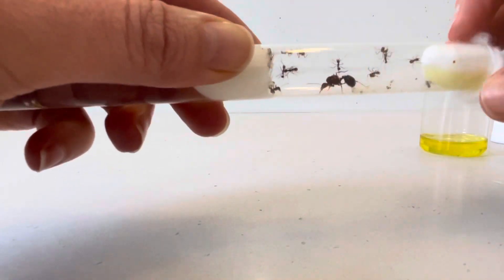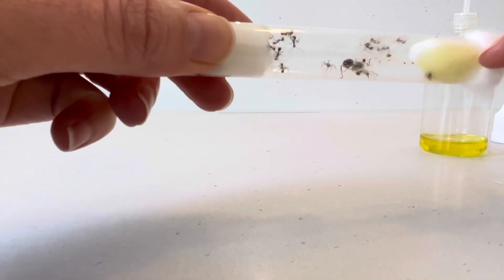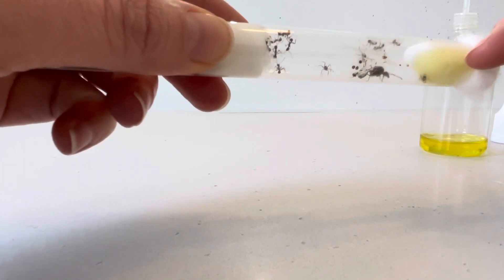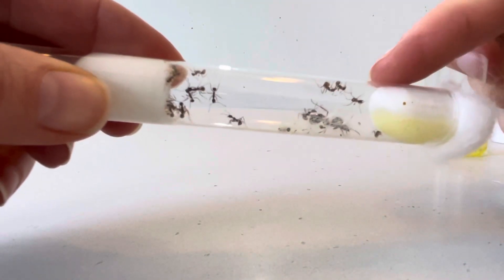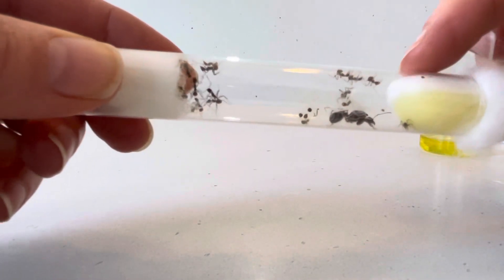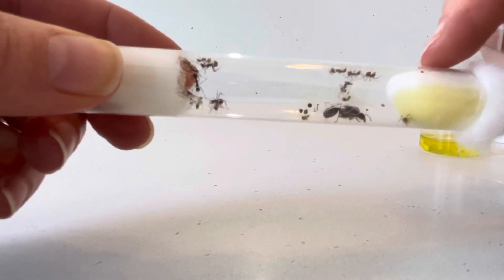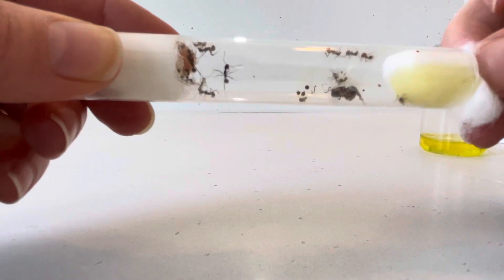Now what you want to make sure is that they've got access to the nice fresh ant juice on the cotton ball, but there's also enough dry cotton wool to allow for air transfer. You don't want this to be all completely soaked with ant juice because that will block the airflow.